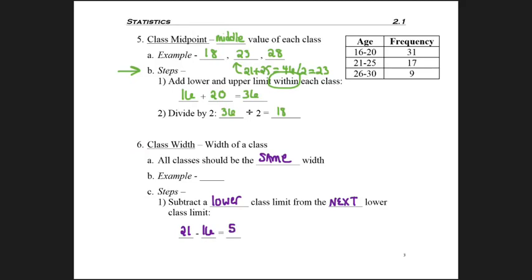So all of my class widths should be 5. And I could even double check it on this one, take my class lower limit of 21 and subtract it from the next lower limit of 26, and I do get 5.